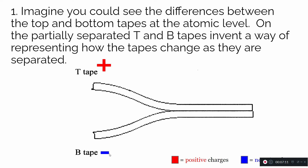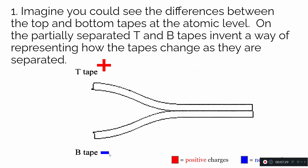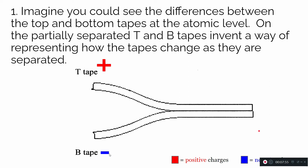Does being uncharged or neutral mean the tape has no electric charges in it? No — because the things that fundamentally have electric charge are subatomic particles: protons and electrons. Protons are positively charged, and electrons are negatively charged. Of course there are protons and electrons in the tape — anything made of matter has a nucleus containing protons and neutrons. Neutrons have no electric charge, but protons do, so there are positive charges in the nucleus of every atom of the sticky tape, with electrons orbiting around.